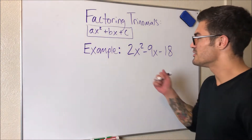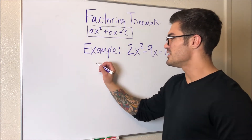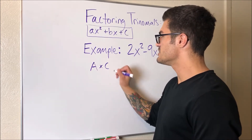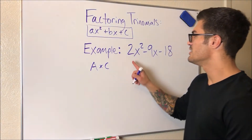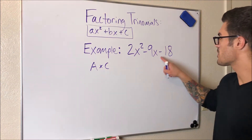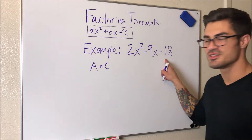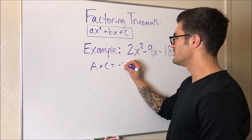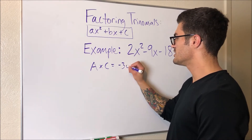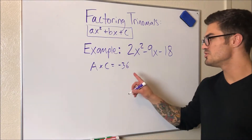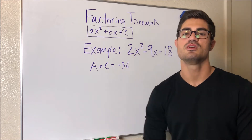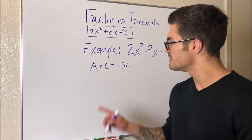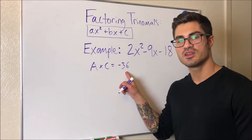The reason they call it the AC method is the first thing you do is A times C. In this case our A is 2 and our C is negative 18, so our A times C is negative 36. Now what we're going to do is use this negative 36 and look for two things that multiply together to give us negative 36.